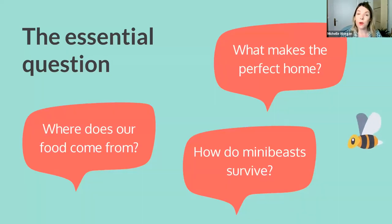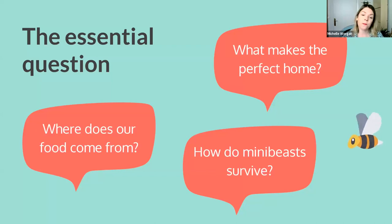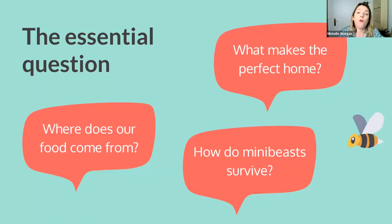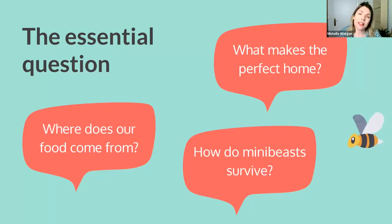There are lots of different angles we might take, depending on the age and level of your students. For example, with 'What makes a perfect home?' we could explore things homes contain, or homes in different parts of the world, or more essential aspects of what a home is rather than materialistic objects. The answer to this question might be different for different people — there is no single answer.